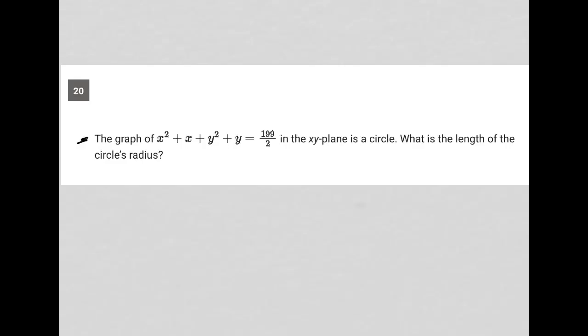This question says the graph of x² + x + y² + y = 199/2 in the xy-plane is a circle. Let me just stop right there.